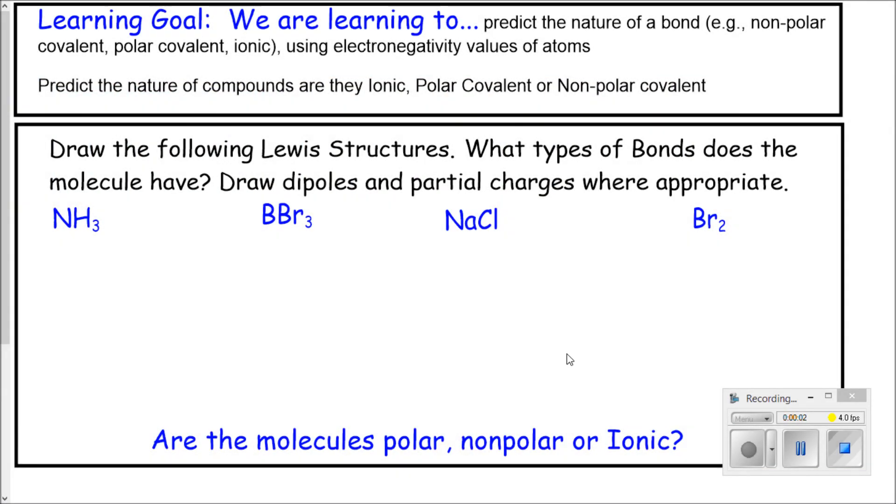Good day grade 11 chemistry students. Today what we're learning to do is predict the nature of bonds. We actually already did this last lesson, but we're going to add to it a little bit. We are going to be able to predict the nature of compounds - are they ionic, polar covalent, or non-polar covalent?